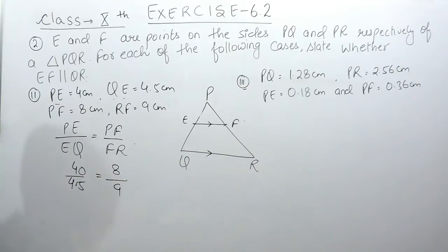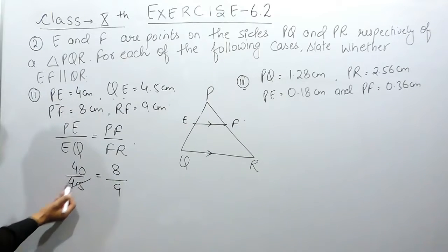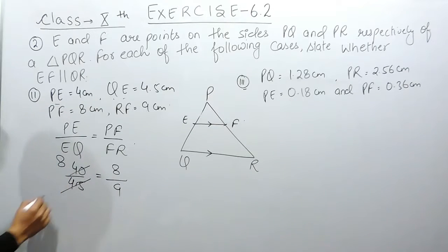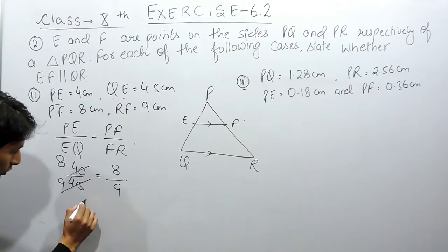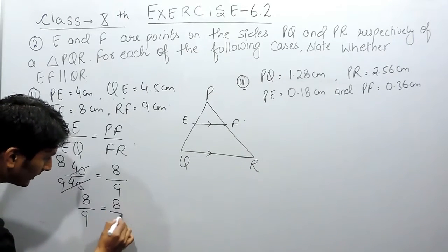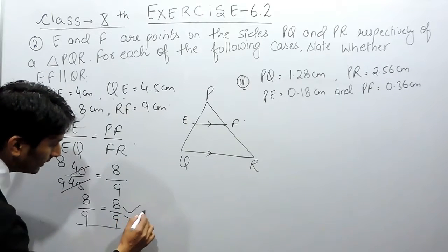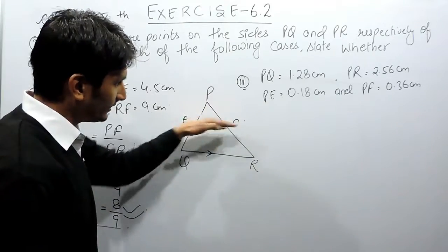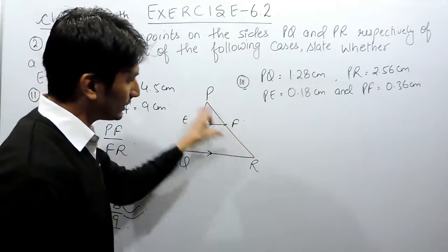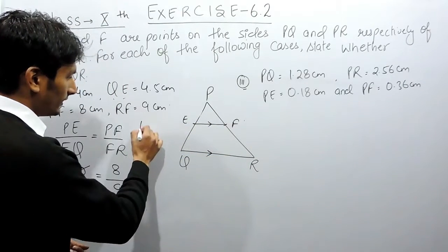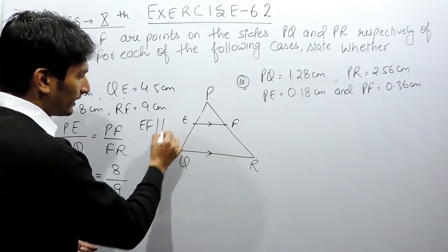If I remove the decimal, 10 will be added to the numerator. This can be cancelled by 5 — that gives 8 over 9 on the left-hand side. On the right-hand side, 8 upon 9 as well. So the ratio is the same, meaning EF cuts the two sides in equal ratios, and therefore EF must be parallel to QR.